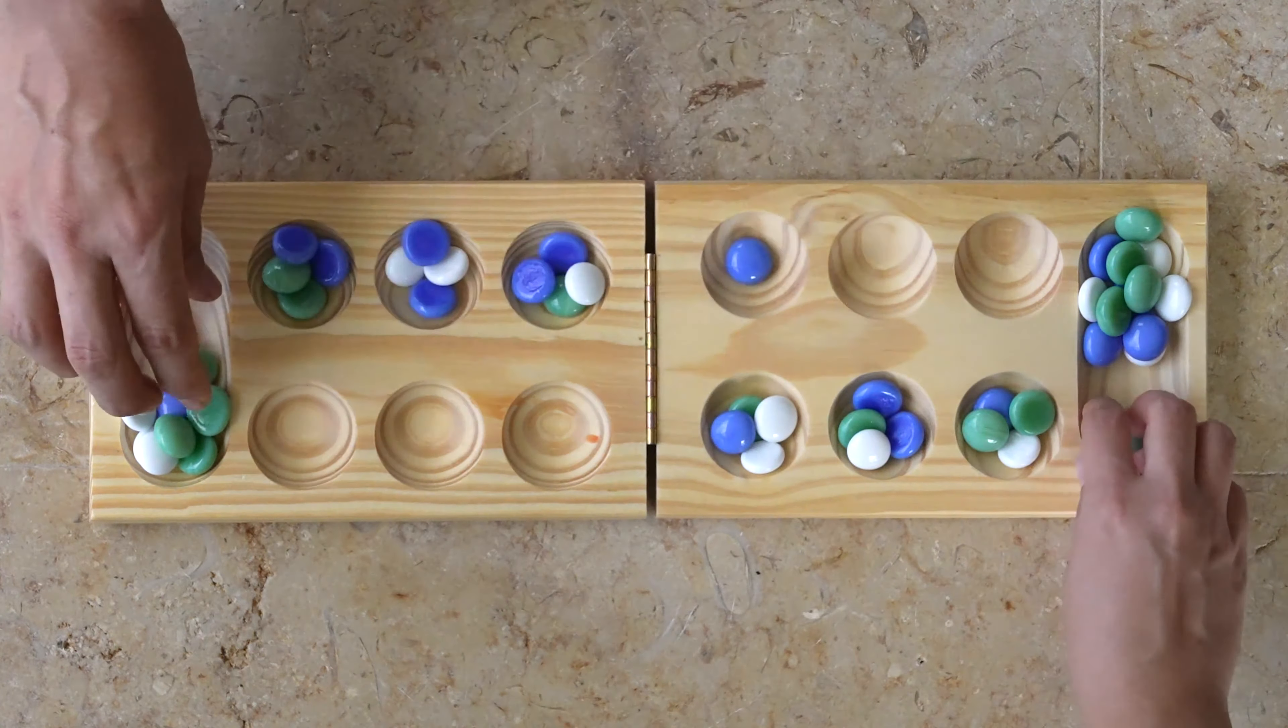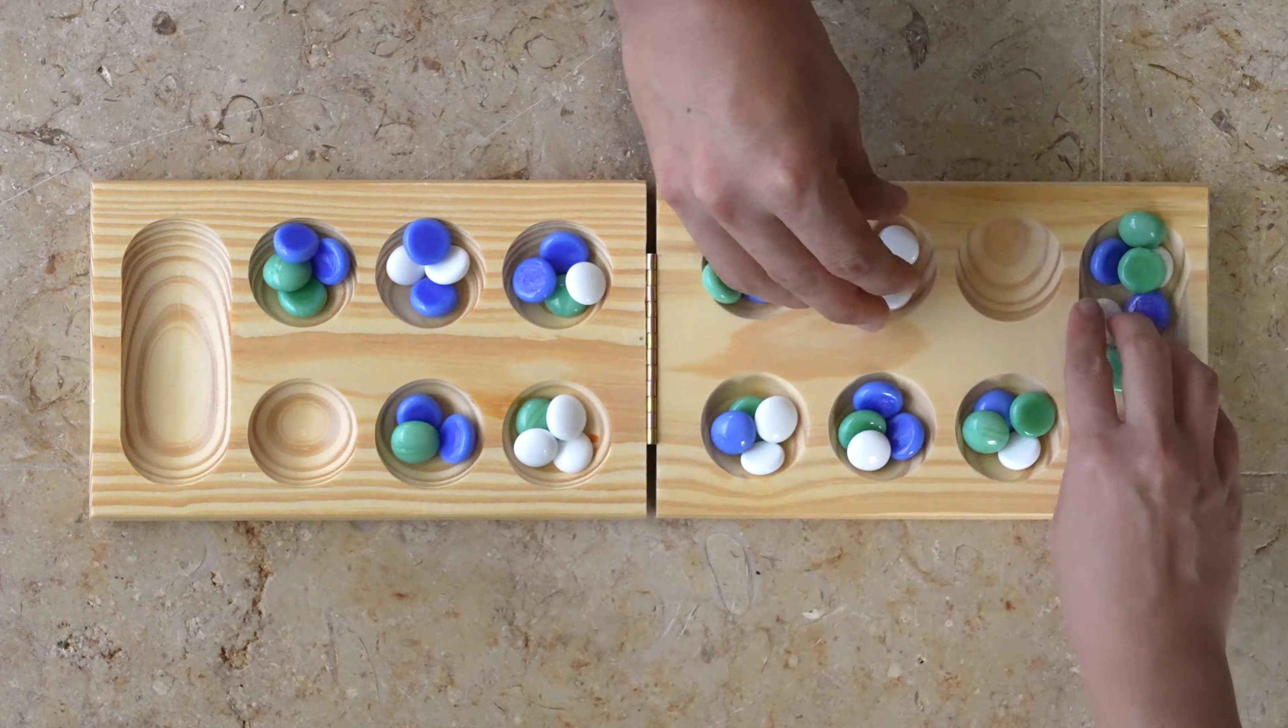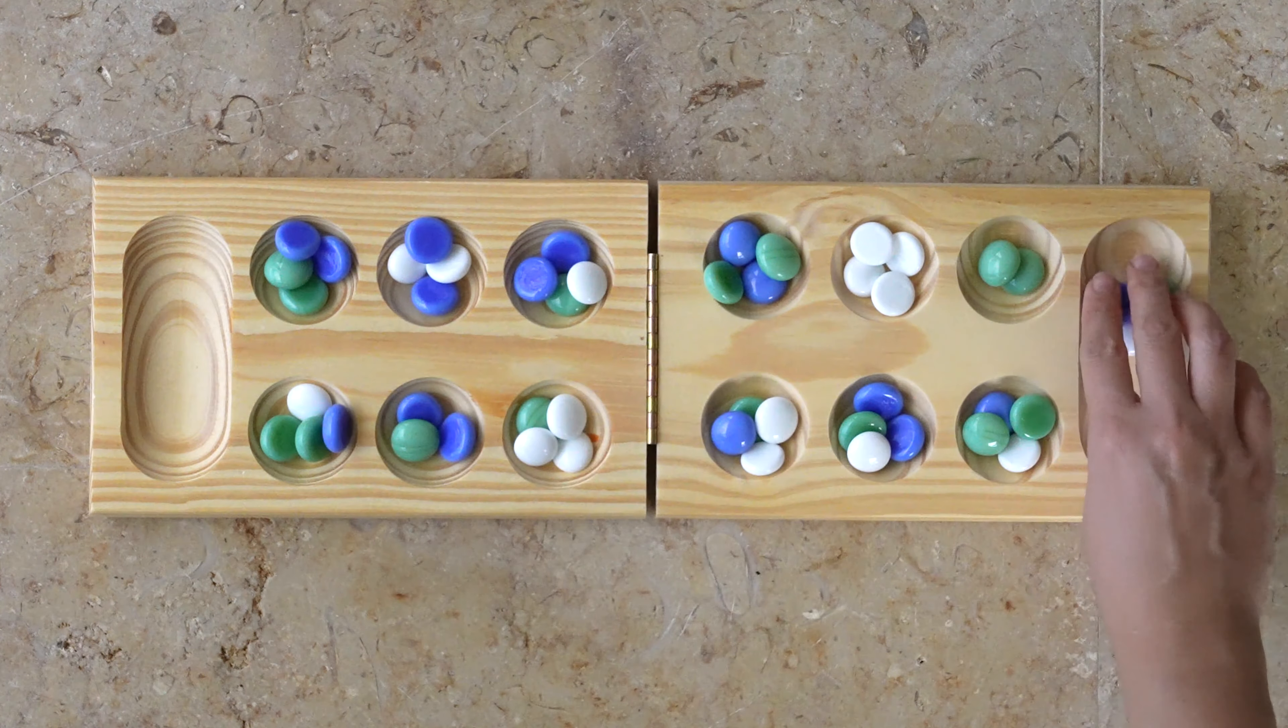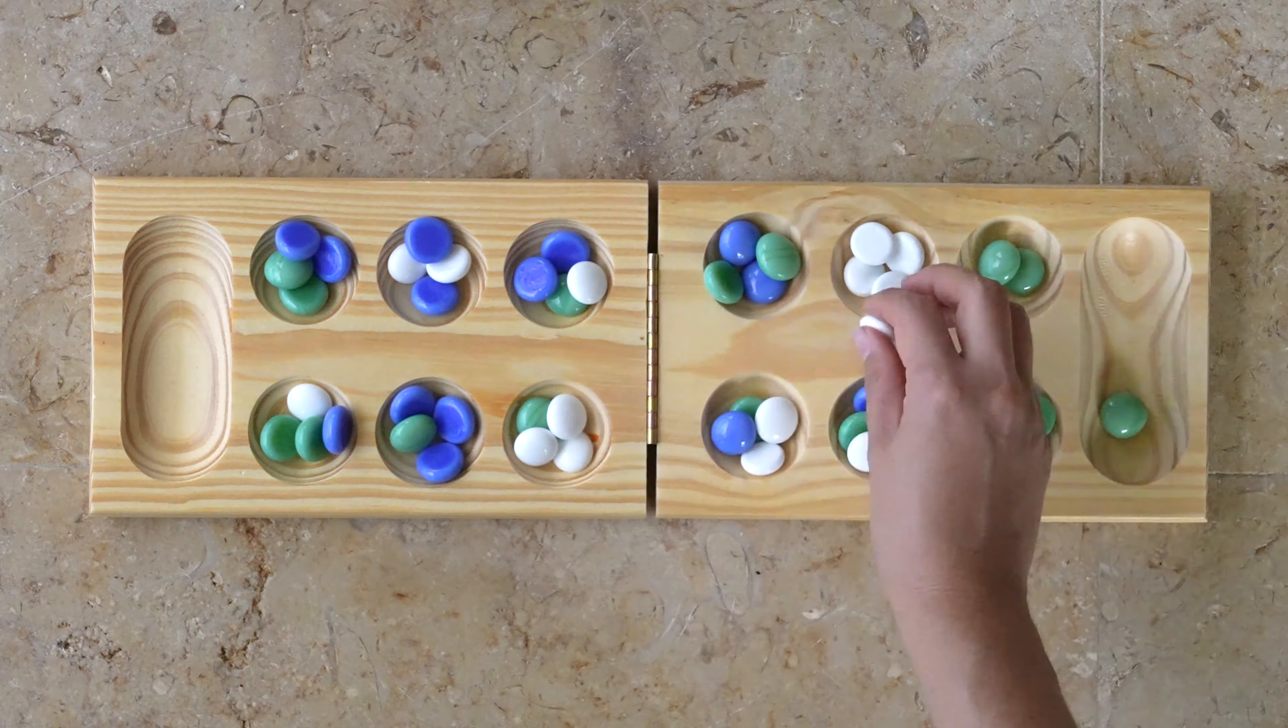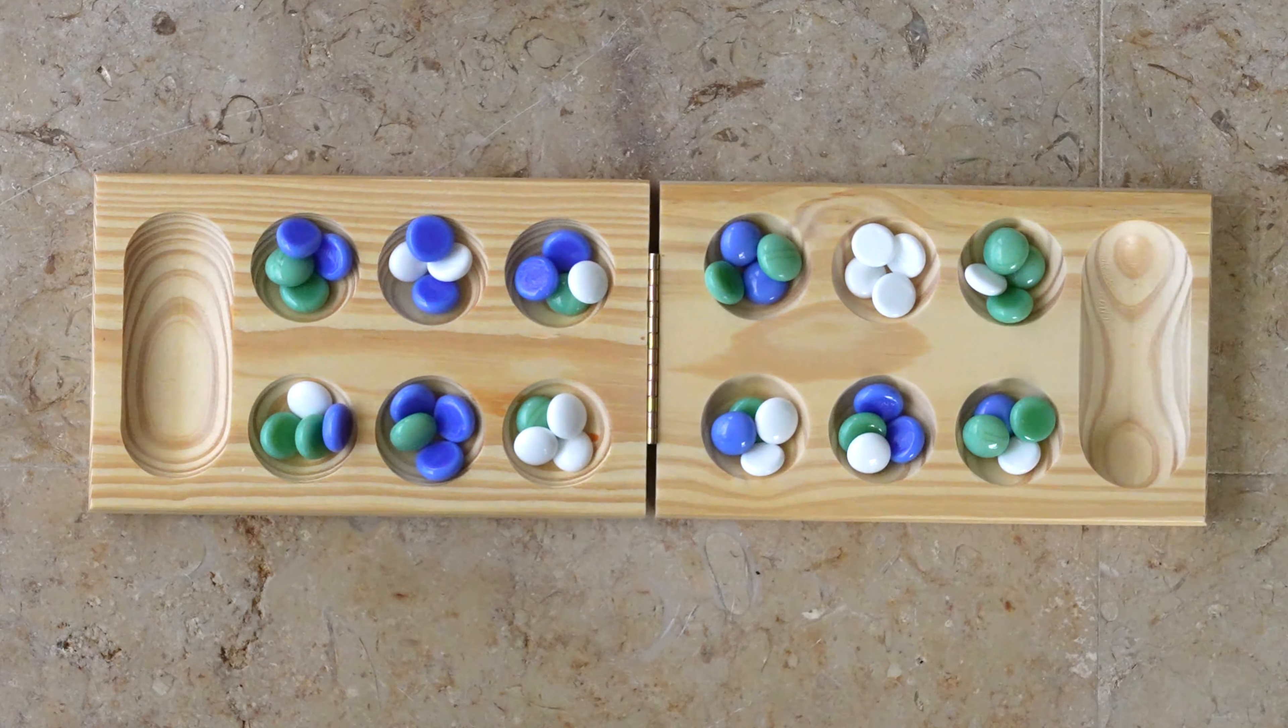We like to count by simply distributing all the pieces from the Mancalas back into their players cups. The player who is missing pieces on their side is the loser and gets to demand another match.